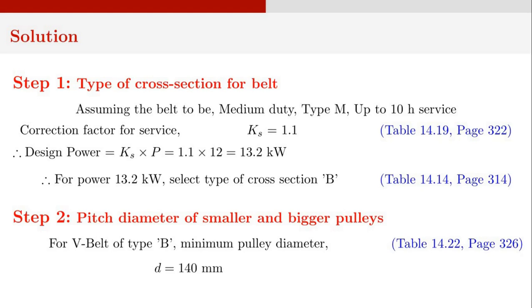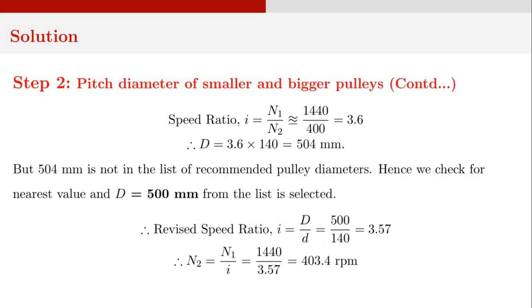In the second step, we determine the pitch diameters of the smaller and larger pulleys. For a V-Belt of type B, the minimum pulley diameter is 140 millimeters, obtained from table 14.22 on page 326. There are smaller pulleys available, but they are of second choice, so we select the first choice: d equals 140 millimeters. The speed ratio I is N1 divided by N2, that is 1440 divided by 400, which equals approximately 3.6.